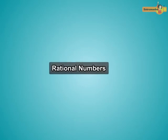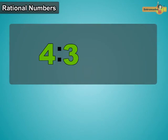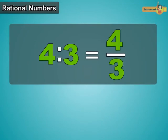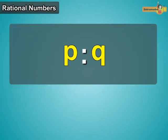Now let us learn about rational numbers. We know that the ratio 4 is to 3 can also be written as 4 upon 3. Similarly, the ratio of two integers P and Q can be written in the form of P upon Q.